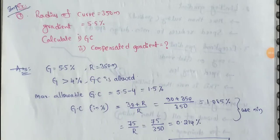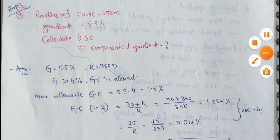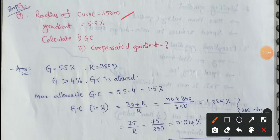Next topic: Grade Compensation or Compensated Gradient. In this video, we will discuss two types of models with example problems. These two types of models are very important. Grade Compensation, GC, means the compensated gradient.